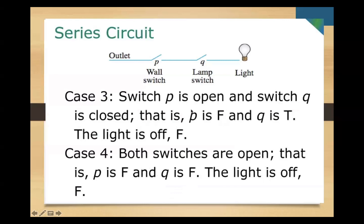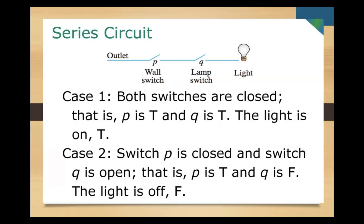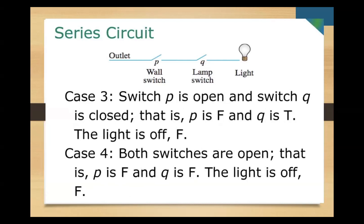Case three: switch p is open and switch q is closed — p is false and q is true — the light is still off, so false. This is similar to the conjunction. The series circuit: the light is on only if both p and q are closed, since the current can pass through the wire.